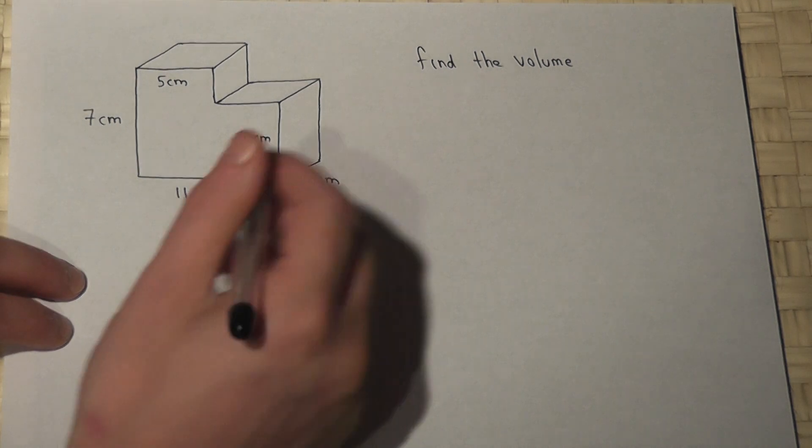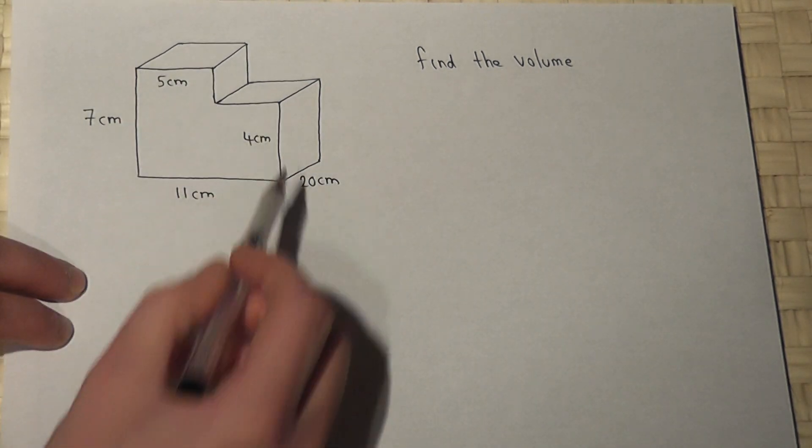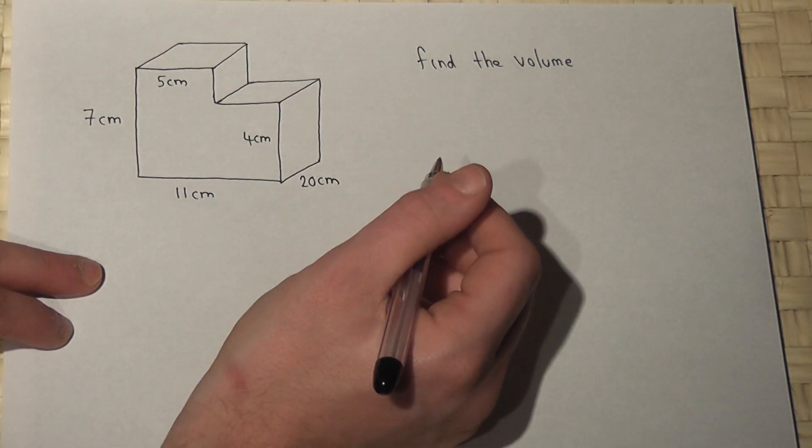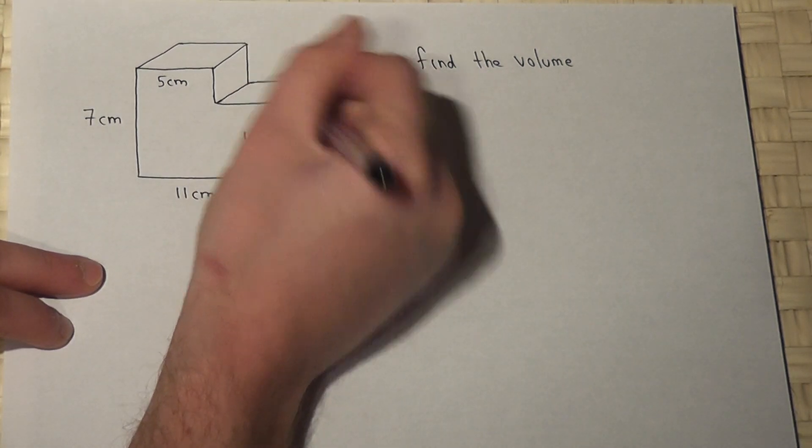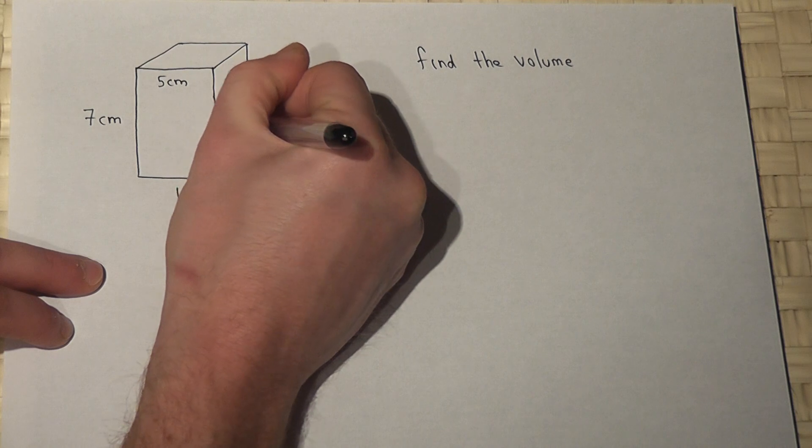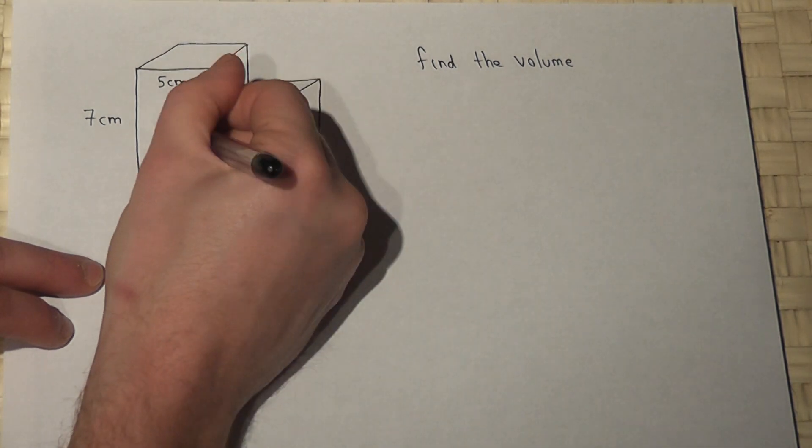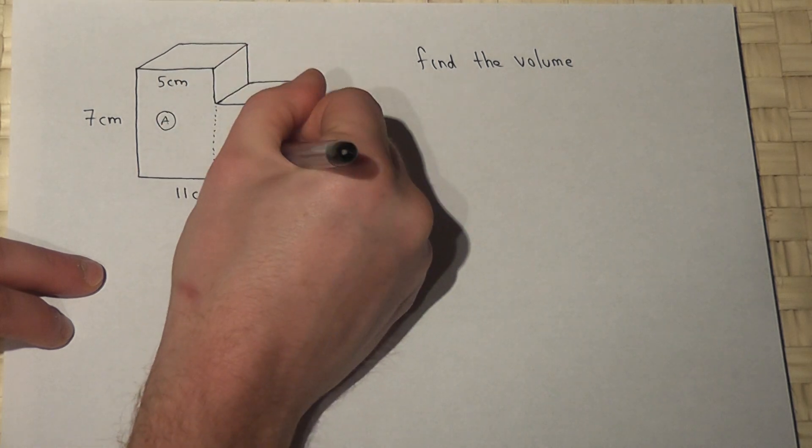Now to find the volume we first of all work out the area of the face of the prism. Now if I were to split the shape like so then I can treat it as two rectangles, rectangle A and rectangle B.